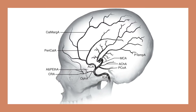Shown here is the anterior circulation of the brain and that which is responsible for supplying the eye. The internal carotid artery (ICA) is shown at the bottom. The ICA extends up into the brain and gives off a branch called the ophthalmic artery (OPHA), which extends into the orbit and then gives a branch called the central retinal artery (CRA). A compromise of the vascular supply in this area will often lead to unilateral, transient, or permanent vision loss depending on how long the blood supply is compromised.